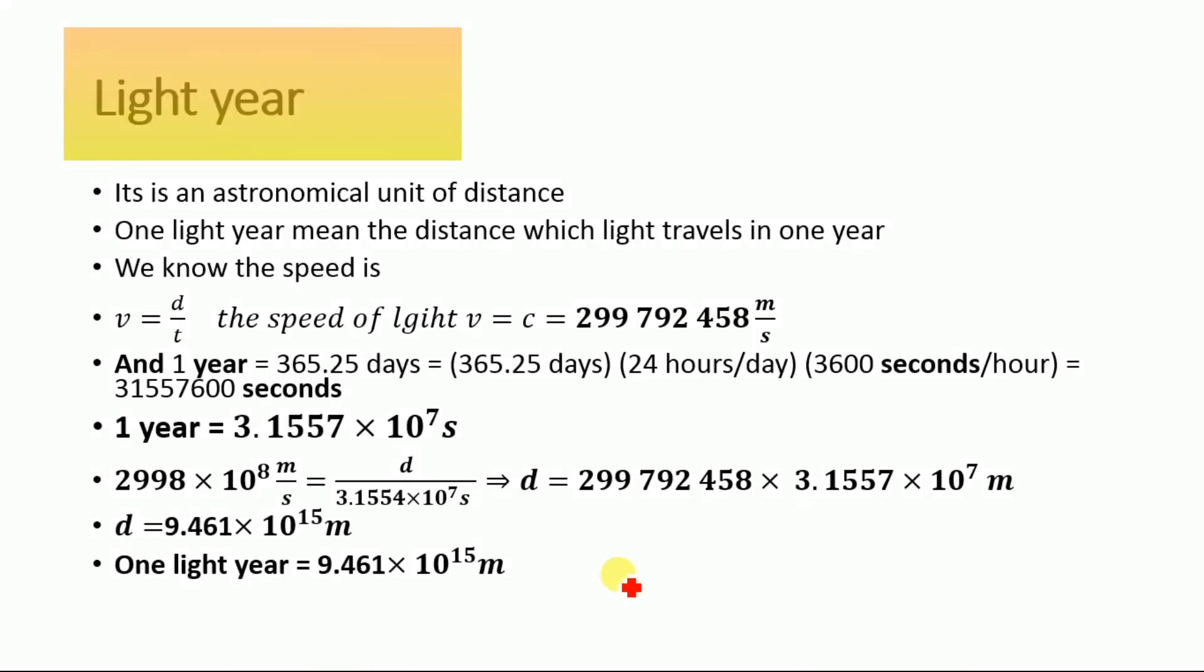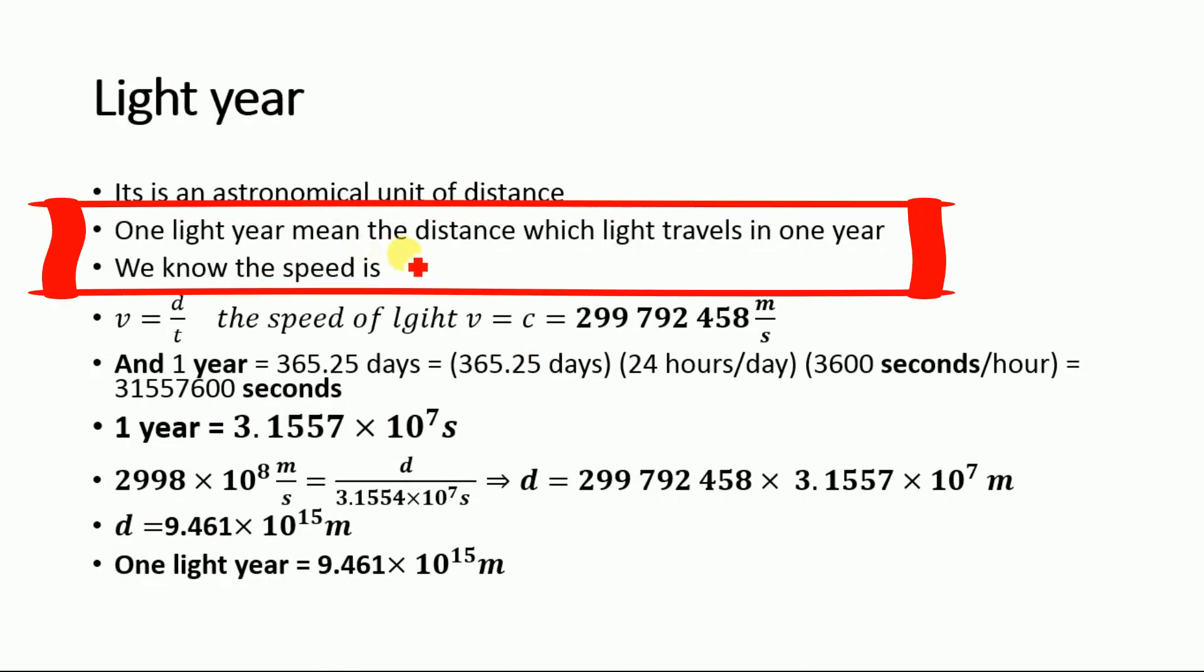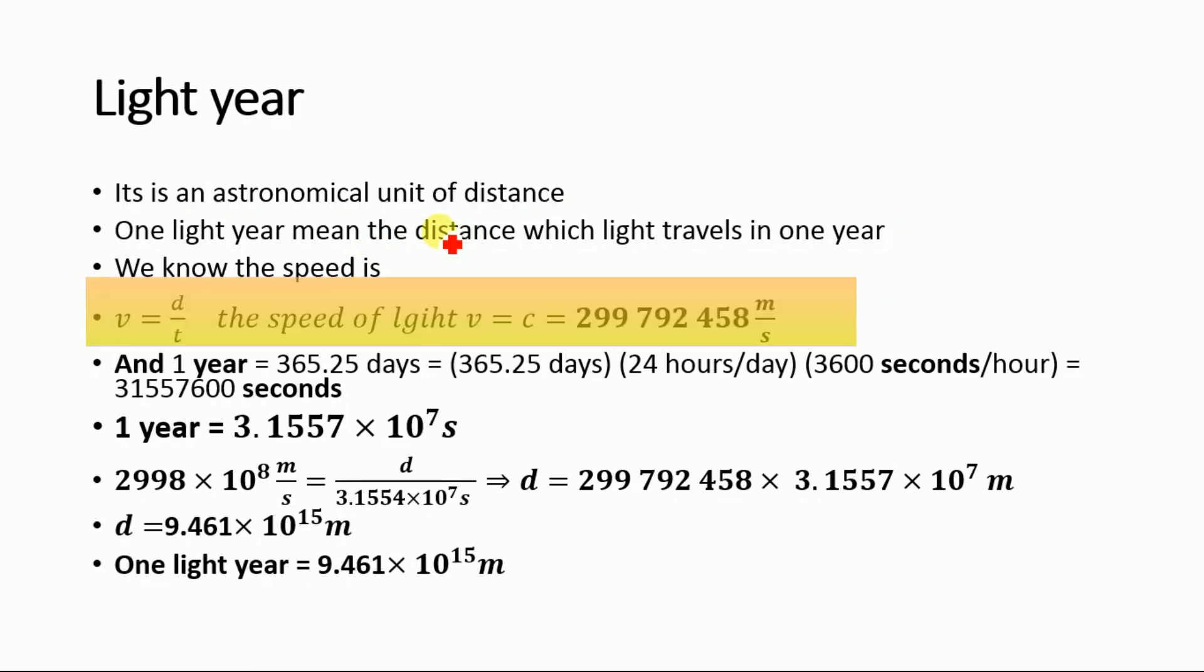Now, what is light year? Light year is an astronomical unit of distance. One light year means the distance which light travels in one year. We know that speed v is equal to d by t, and the speed of light we know is equal to 299,792,458 meters per second.